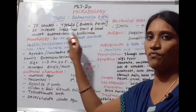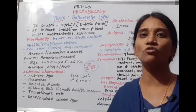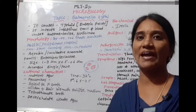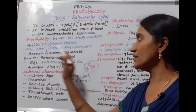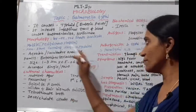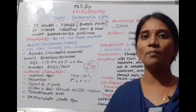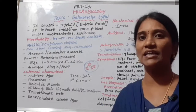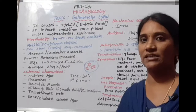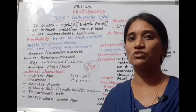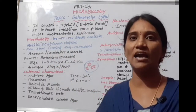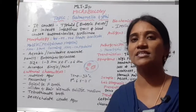The morphology of Salmonella typhi: it is a gram-negative bacteria, meaning it appears pink in color, and it is rod-shaped. These bacteria are motile; movement occurs by peritrichous flagella. Peritrichous flagella means the flagella are arranged all over the body. These are non-spore-forming bacteria.